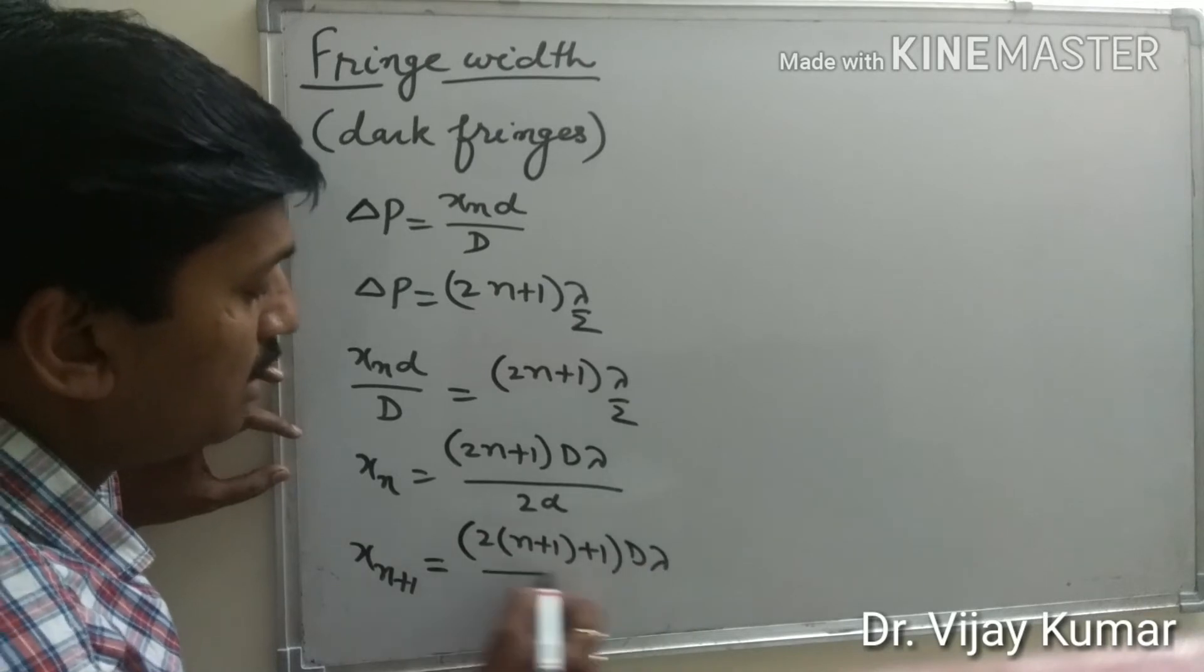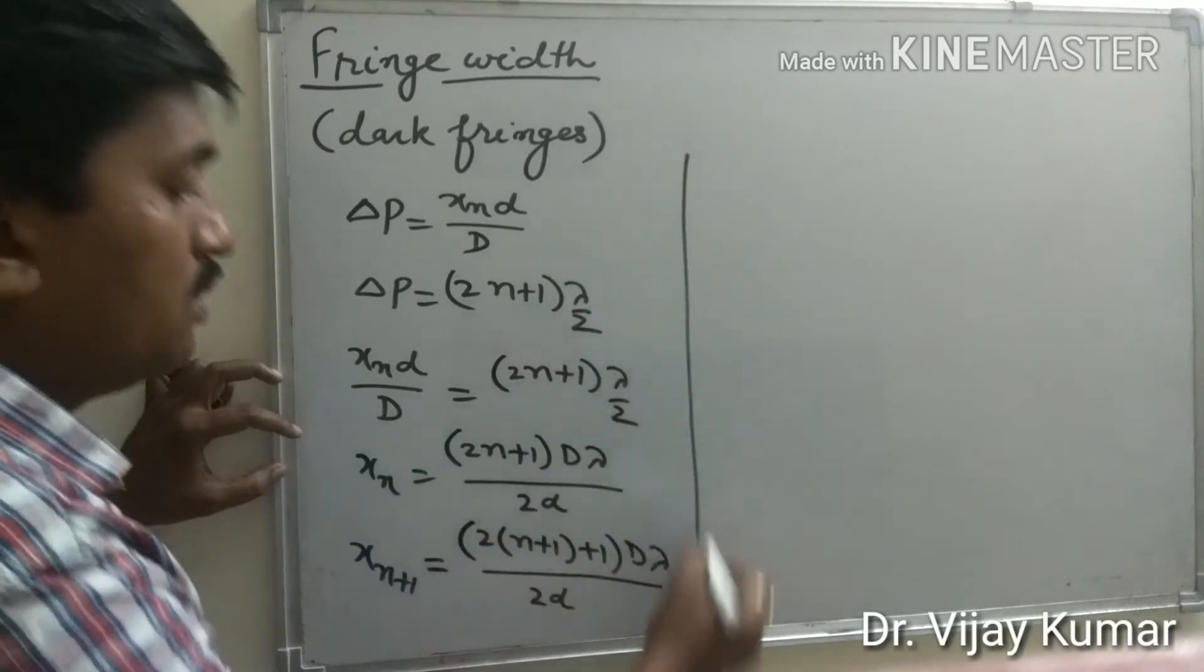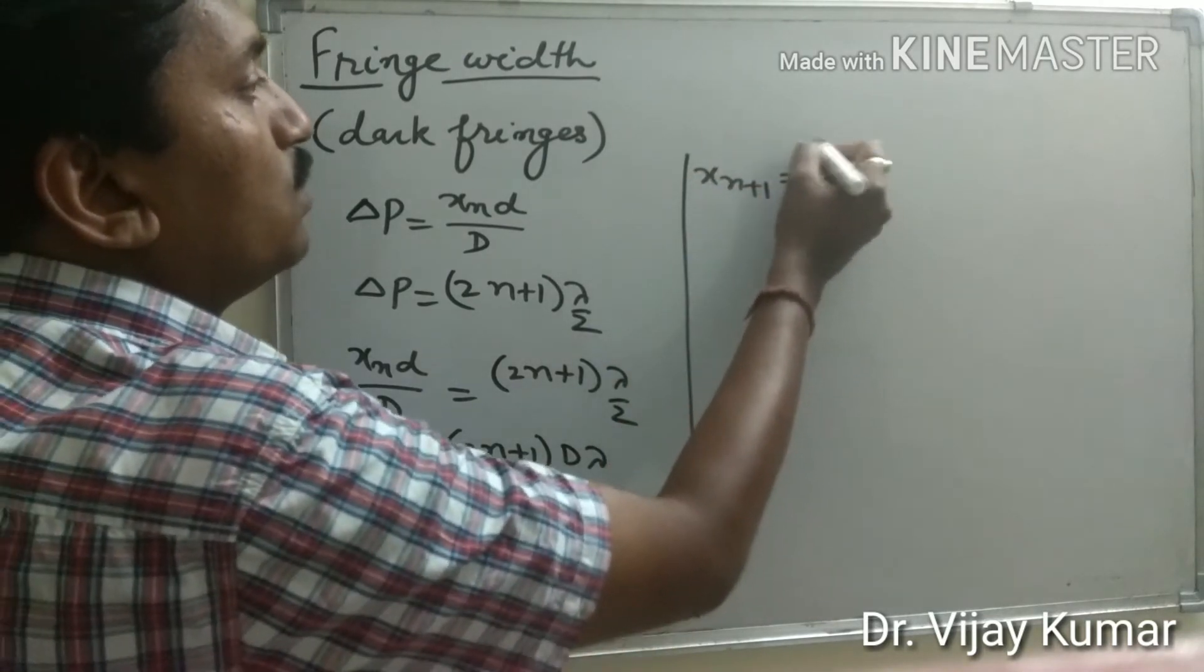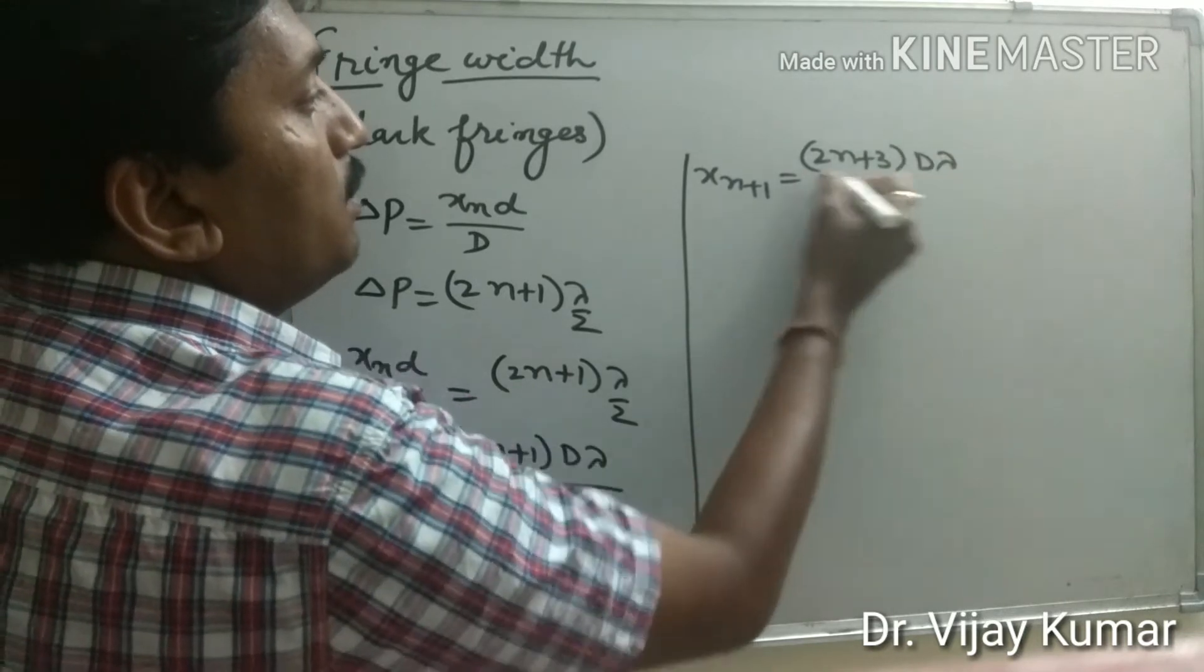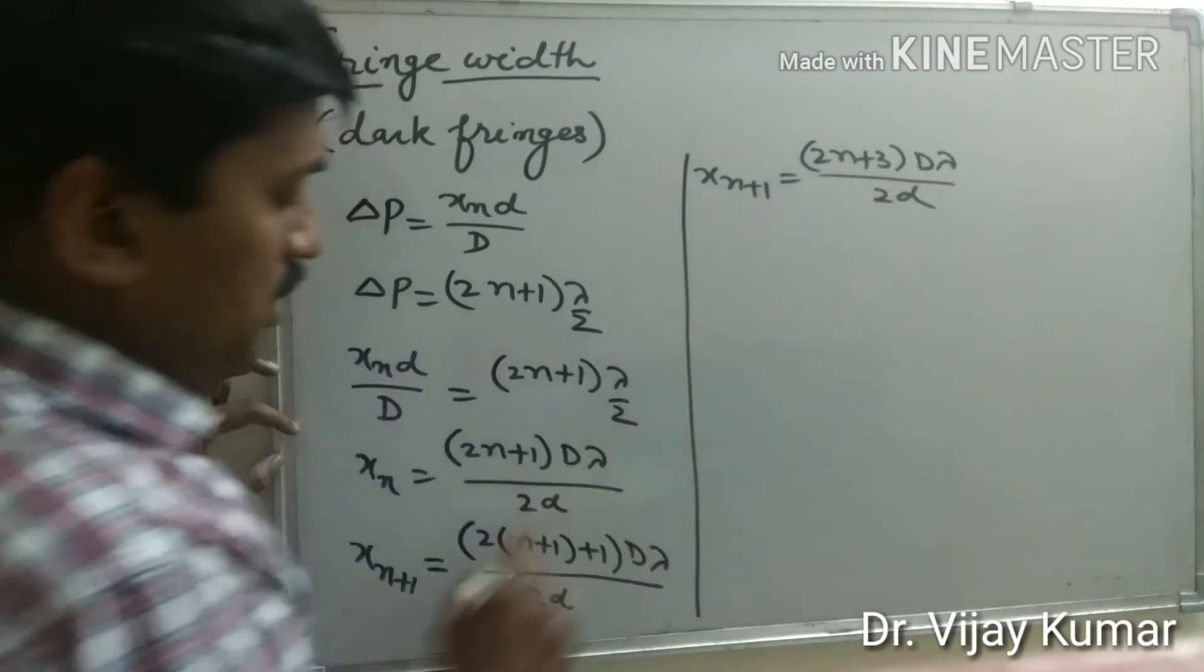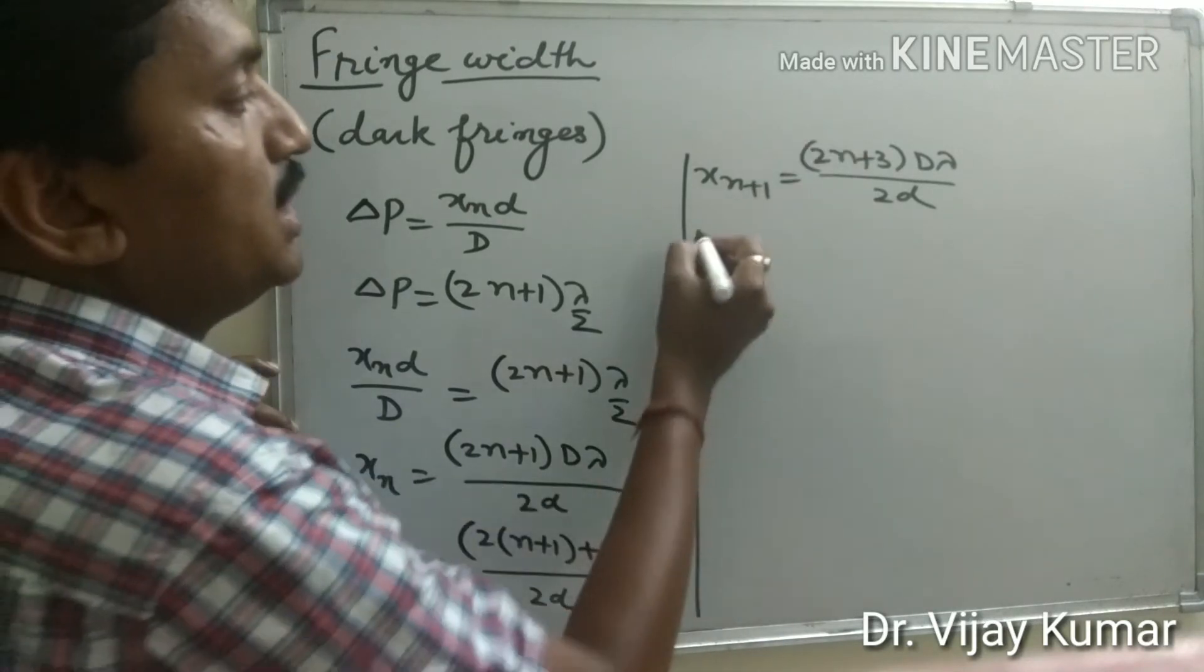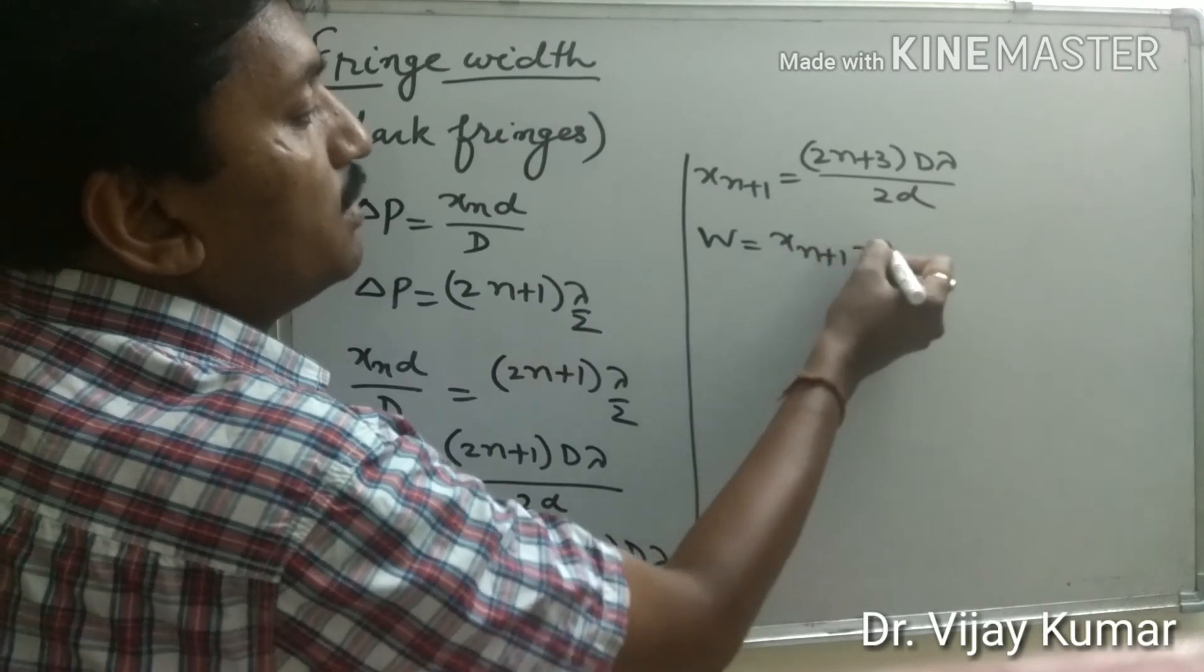Therefore xn+1 = (2n+3)Dλ/2d, where 2(n+1)+1 = 2n+3. Now, the fringe width W = xn+1 - xn.